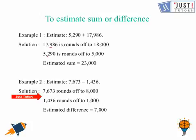7,673 rounds off to 8,000 because here 6 is sitting at the hundreds place which is bigger than 5 and in this number 1,436, at the hundreds place we have a 4 which is less than 5.